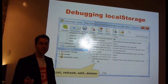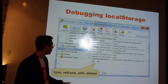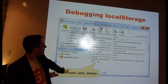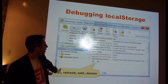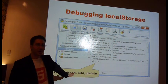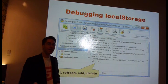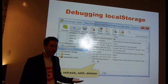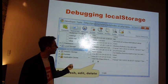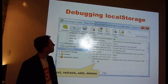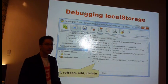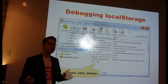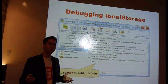If you do run into trouble, it's very easy to debug. In Chrome, you can list, refresh, edit, and delete all of your local storage values. I think Firefox through Firebug has a similar thing, but I haven't used it. Chrome is great for debugging this with that interface. So that's localStorage — any quick questions or comments before I go to offline?